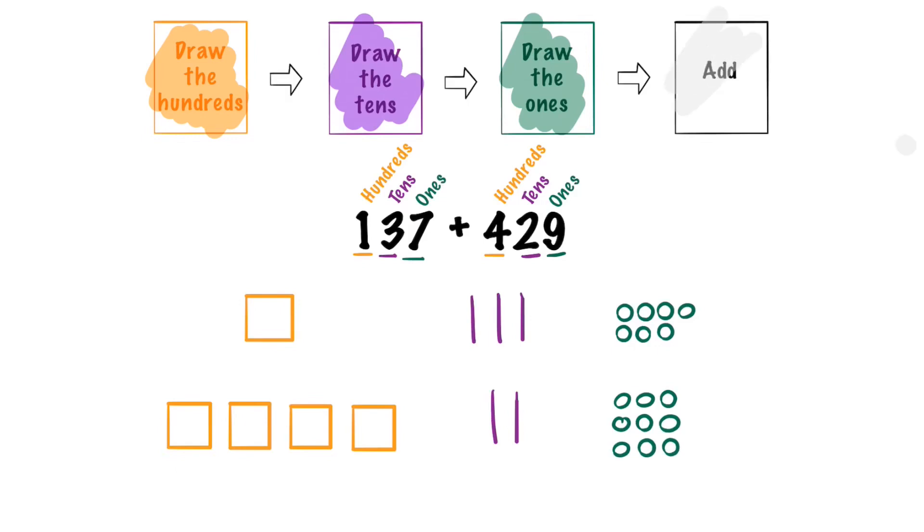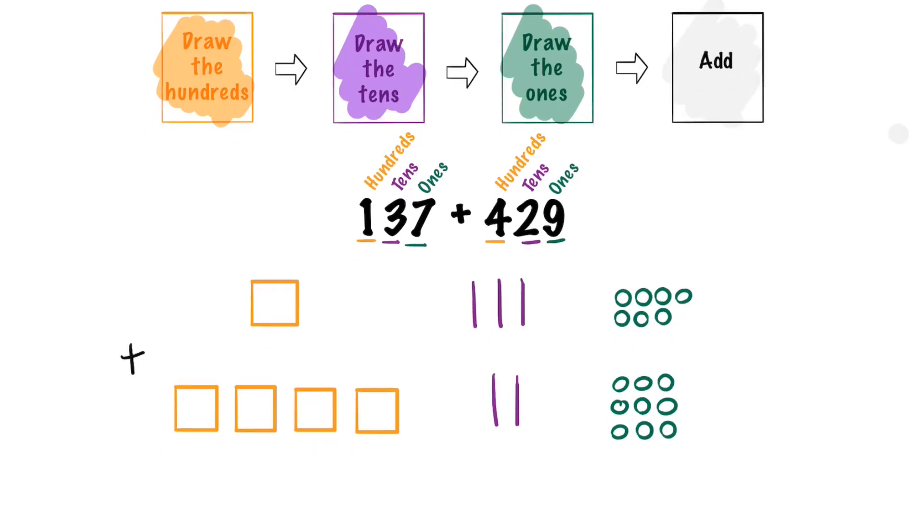The last step says to add. Let's start adding 1, 2, 3, 4, 5, 6, 7, 8, 9, 10. Oh we can put those all together and make a 10. Let's take them over to the tens place. Now let's count how many ones we have.